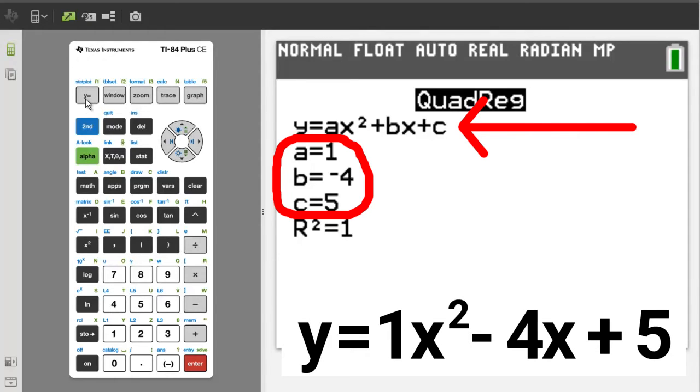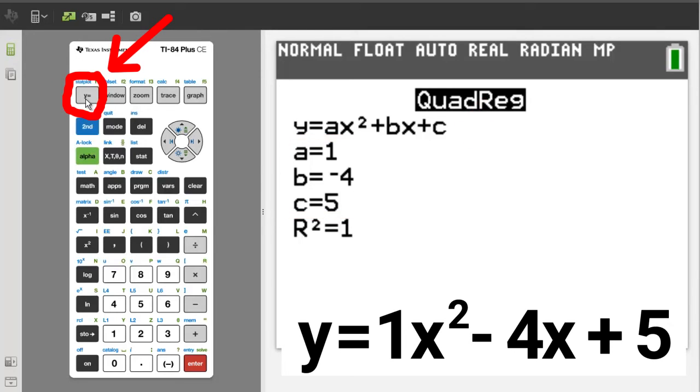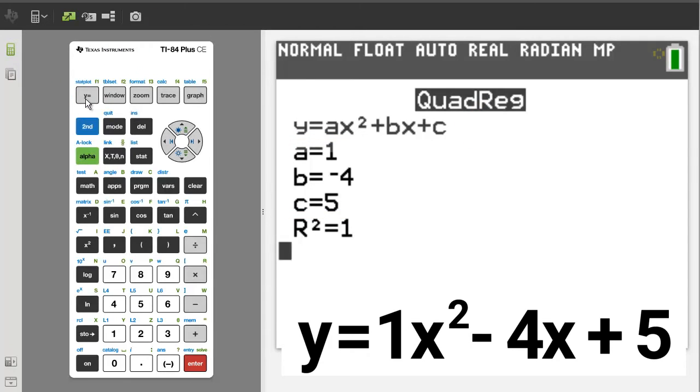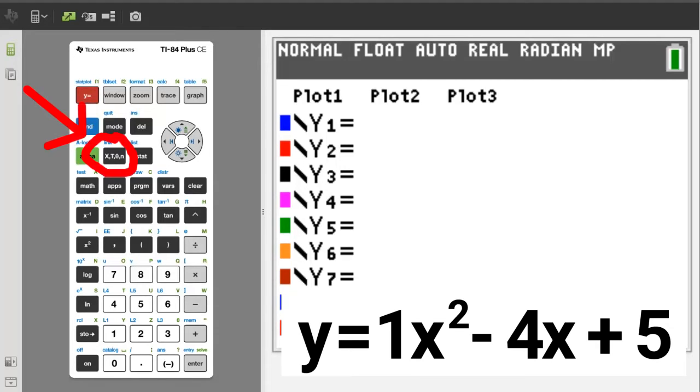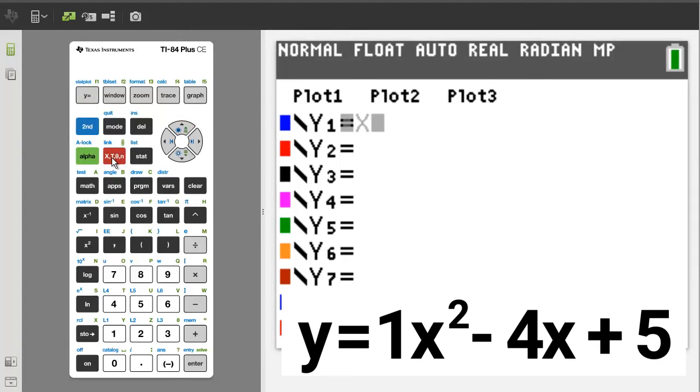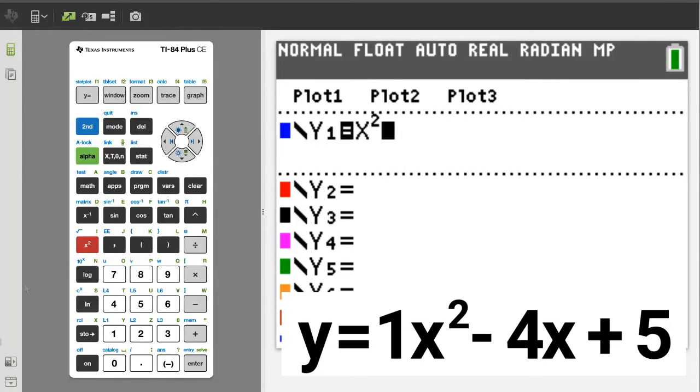Now, we will graph that equation. Press the y equals button. Enter the equation at y1. The x is here. The square is here. Minus 4x plus 5. Now press the graph button.